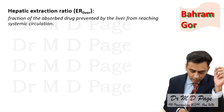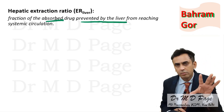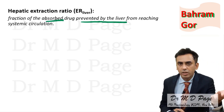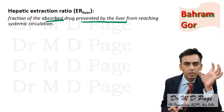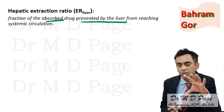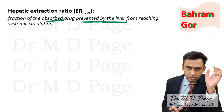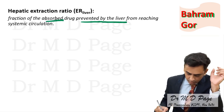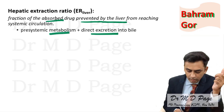The hepatic extraction ratio is the fraction of absorbed drug prevented by the liver from reaching systemic circulation. For example, consider 100% of the drug is being absorbed and 60% is metabolized and/or dumped by the liver — so the extraction ratio is 0.6 and only 40% will reach systemic circulation. Hepatic extraction ratio includes both the drug metabolized as well as drug excreted into the bile.